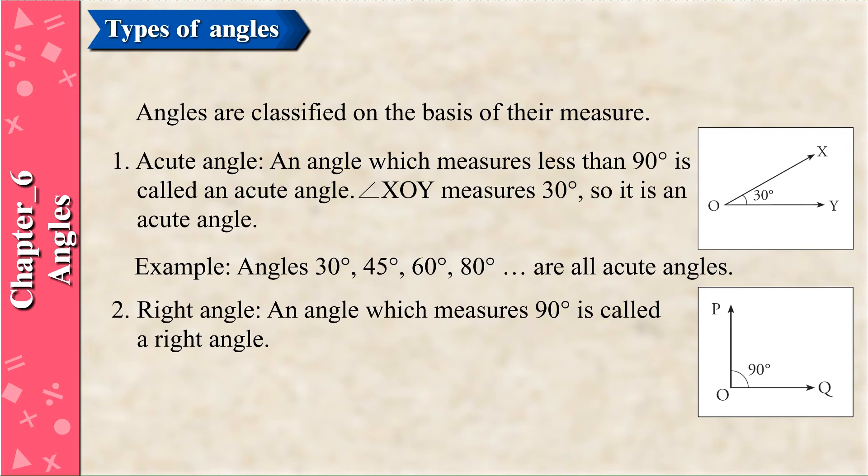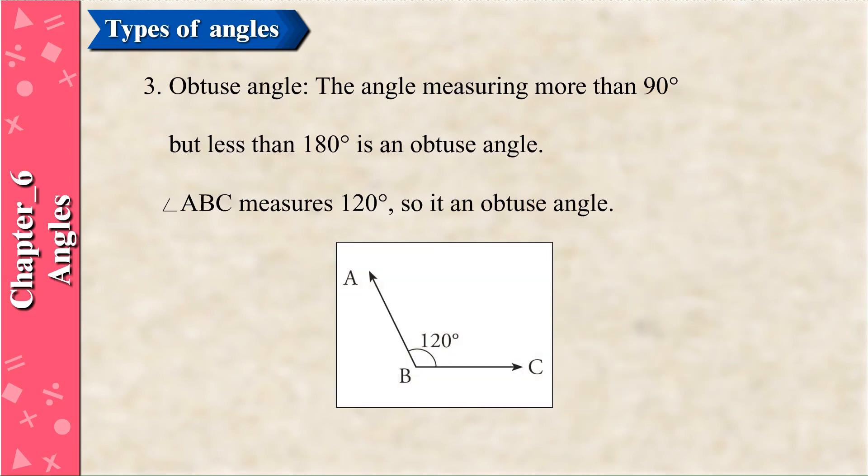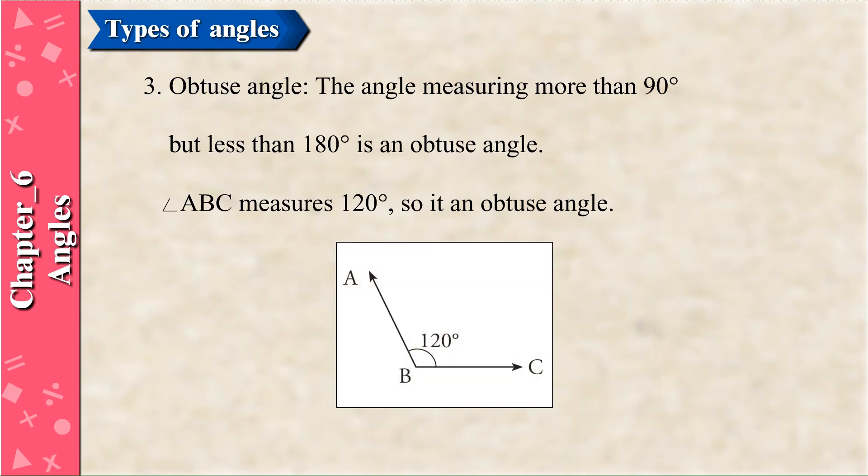Right Angle: An angle which measures 90 degrees is called a right angle. Angle POQ measures 90 degrees, so it is a right angle. Obtuse Angle: The angle measuring more than 90 degrees but less than 180 degrees is an obtuse angle. Angle ABC measures 120 degrees, so it is an obtuse angle.